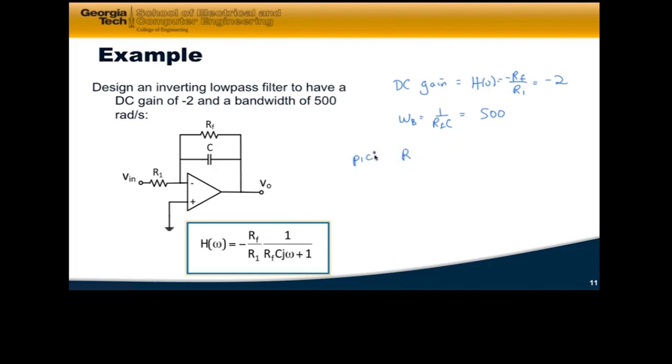So I'll say pick R1 is equal to 1,000 ohms. Very common resistor. Let's go ahead and pick that one. So if I solve for that, then RF would be equal to 2,000 ohms. And C would be equal to 1 microfarad. And that's the design of my circuit. So I would build this, and I would get a filter with this bandwidth and that DC gain.